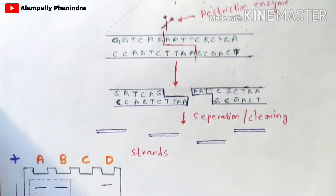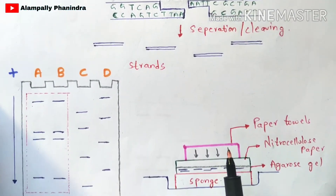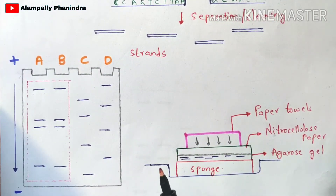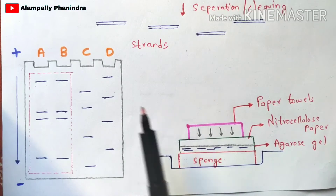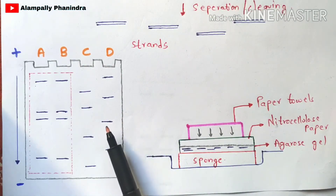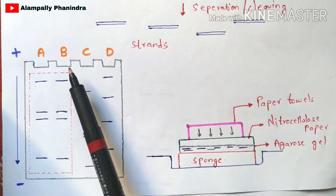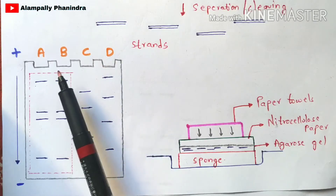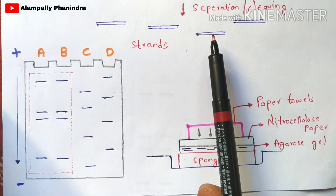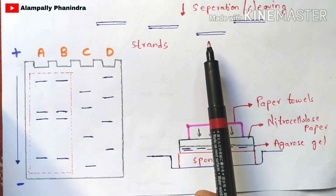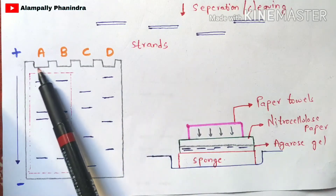Strands will be obtained from bacteria A, B, C, and D. Now you are going to perform gel electrophoresis. An agarose gel is prepared with four wells — A, B, C, and D wells — punched into the agarose gel plate. The strands obtained from bacteria A will be introduced into the A well, and the strands from bacteria B, C, and D into their respective wells.